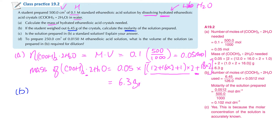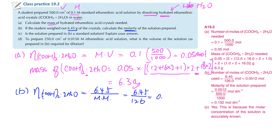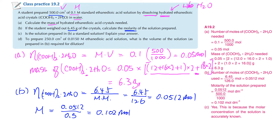If we have 6.45 grams, the number of moles of the solution will equal 6.45 over the molar mass, which is 126. So it would be 0.0512 mol. The molarity of the solution would then equal 0.0512 divided by 0.5, because we made up 500 cm³. So the molarity works out to be 0.102 mol/dm³.